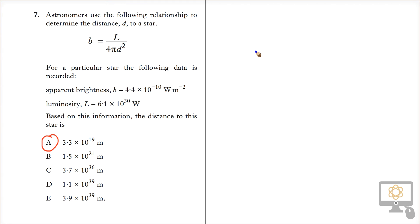So what we'll do over here is just rewrite the equation. b equals L over 4πd². And I'm just going to rearrange it. d² equals L over 4πb.